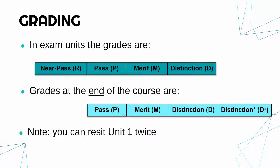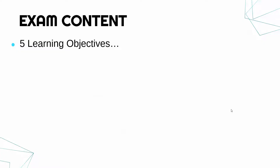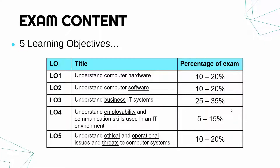Unit 1 has five topics, called learning objectives by the exam board. LO1 is hardware, LO2 is software, LO3 covers a mix including virtualisation and networks, LO4 is about working in IT, and LO5 covers ethical issues and cyber security. Looking at the percentage weightings in the specification: LO4 is easier but worth less; LO3 is the hardest and worth the most, so focus your revision there. LO1, LO2, and LO5 are worth the same, though LO1 is the largest topic and LO5 is relatively small.